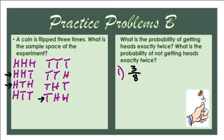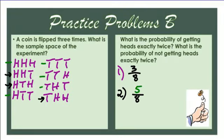The probability of not getting exactly two heads: I have eight total choices, and five of them do not have exactly two heads. So five out of eight chances of not getting exactly two heads.